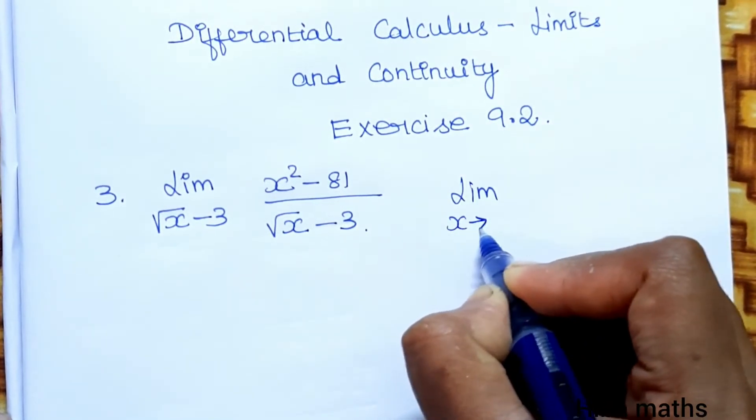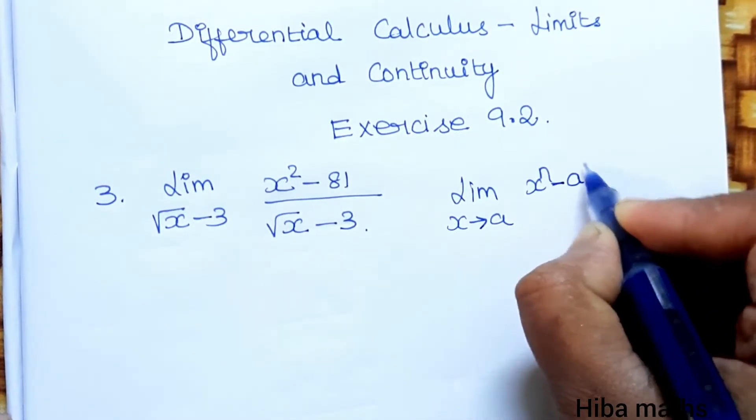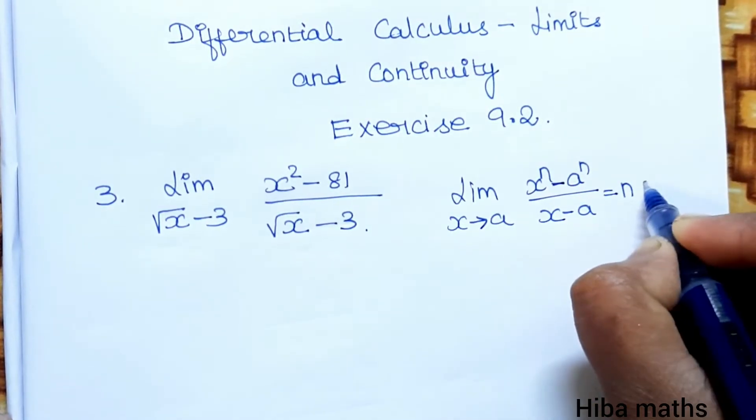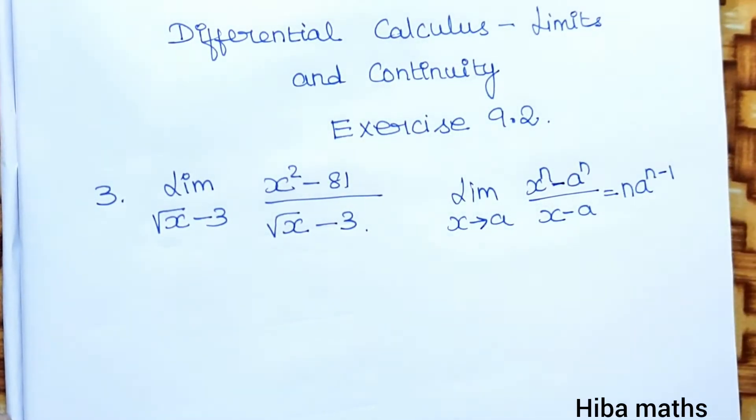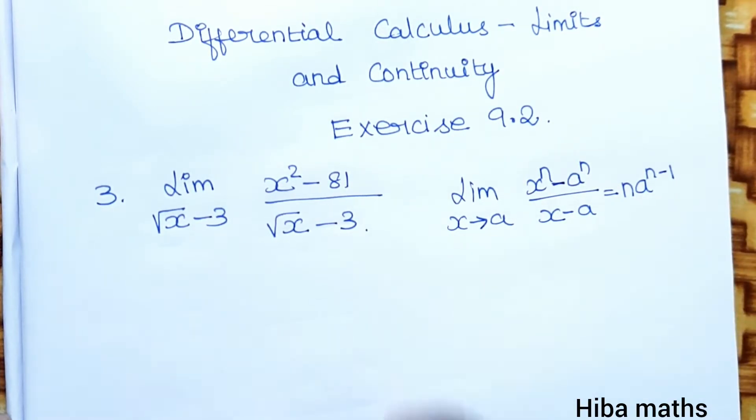Limit x turns to a: x power n minus a power n divided by x minus a is equal to n into a power n minus 1. In a video I told you how to explain this, you can do this.